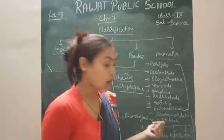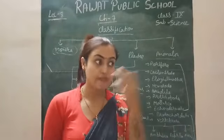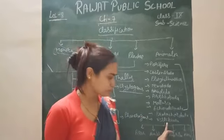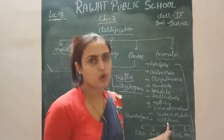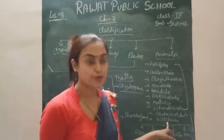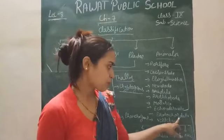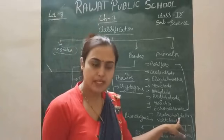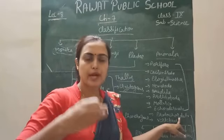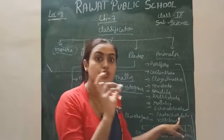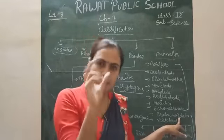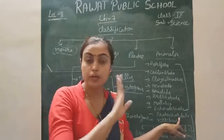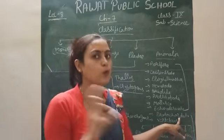Next are chordates — animals which have a notochord or vertebral column. Common points of chordates include a nerve cord and gill slits. Protochordates are not completely chordata because they have a notochord only in the embryonic stage, not in the adult stage. So they are called protochordates — the previous chordates.